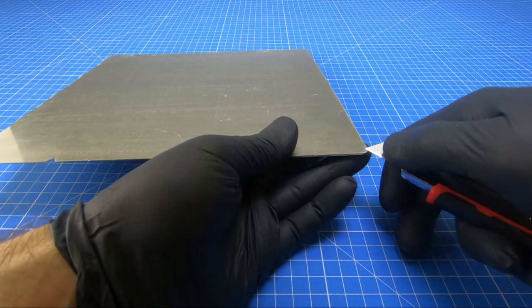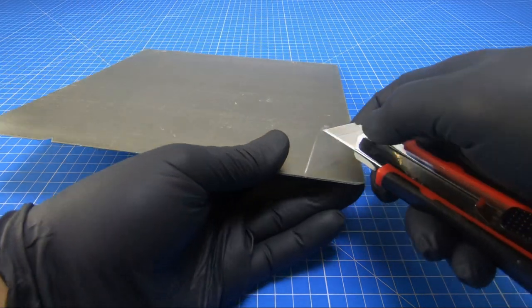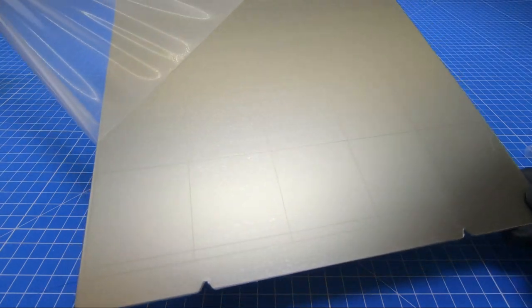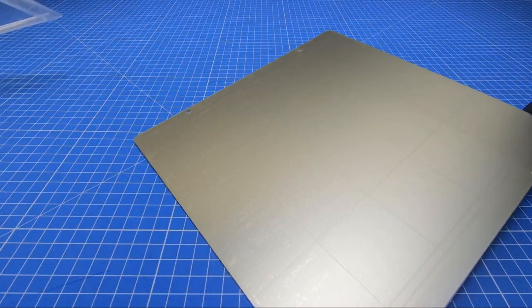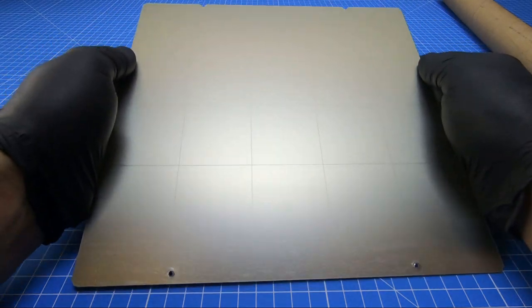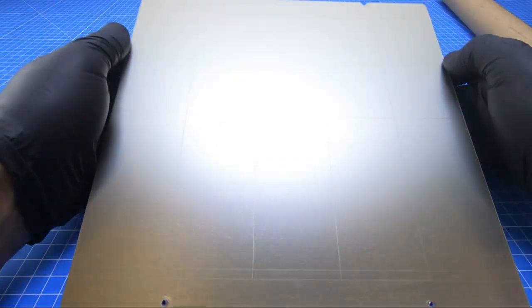Don't forget that there's a protective layer on top of the PEI sheet. If you forget to remove it, your 3D prints won't stick to the surface. Now there are still some little air bubbles, so we'll squeeze them out in the next step.